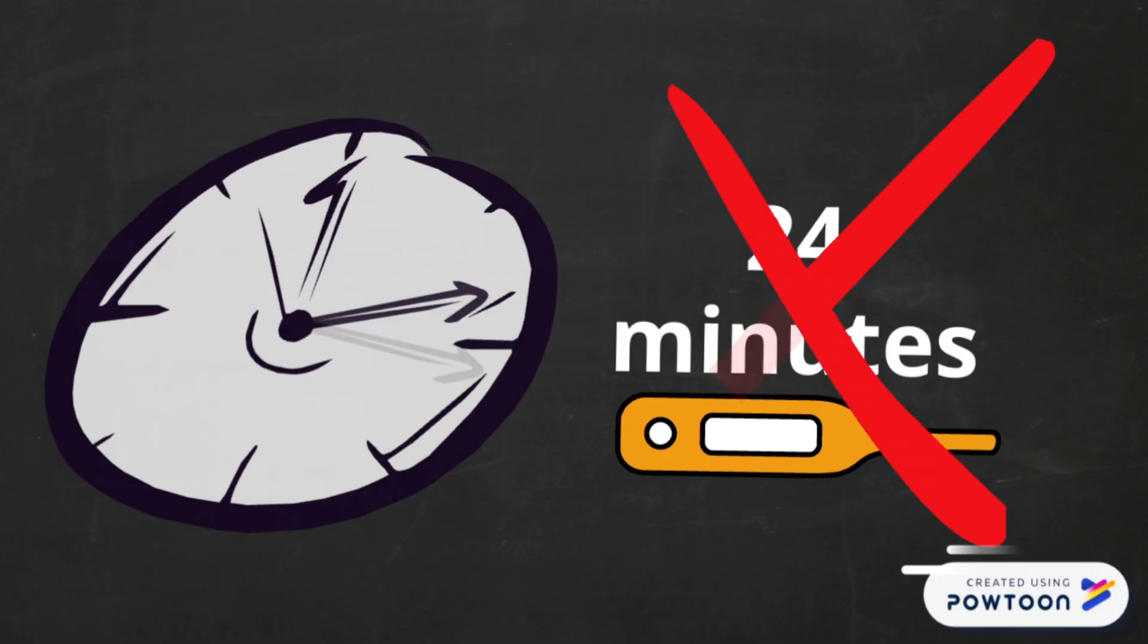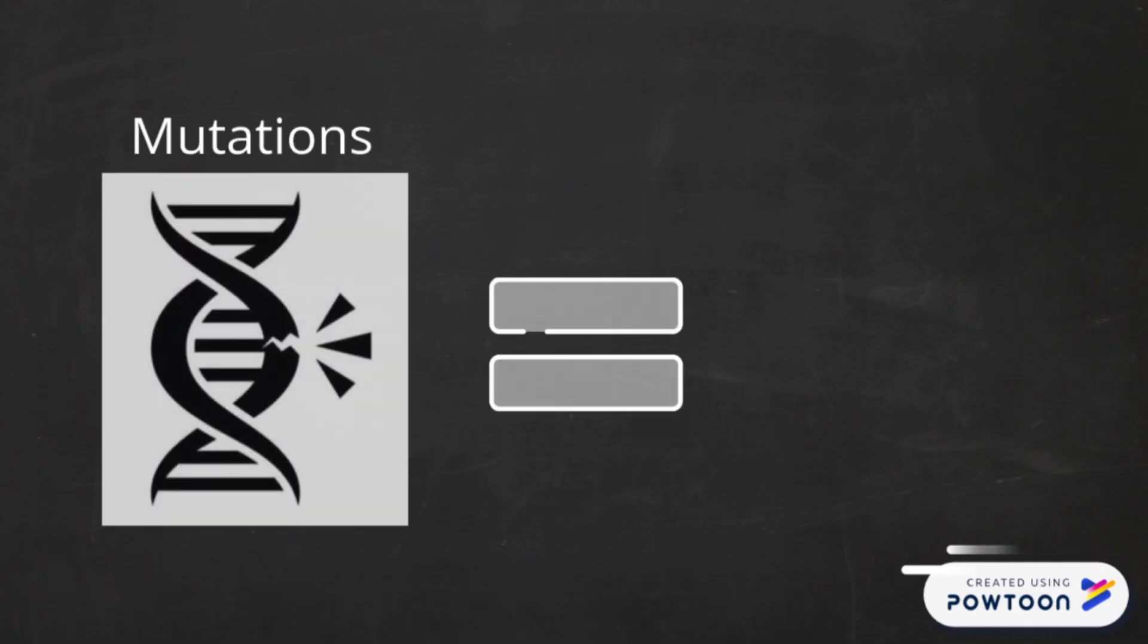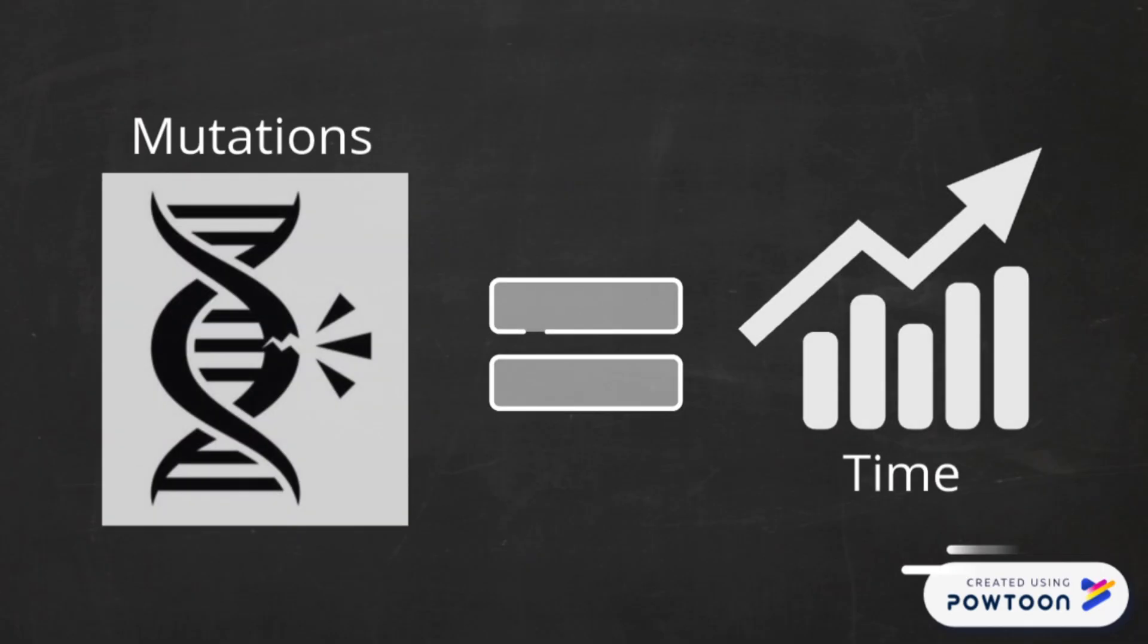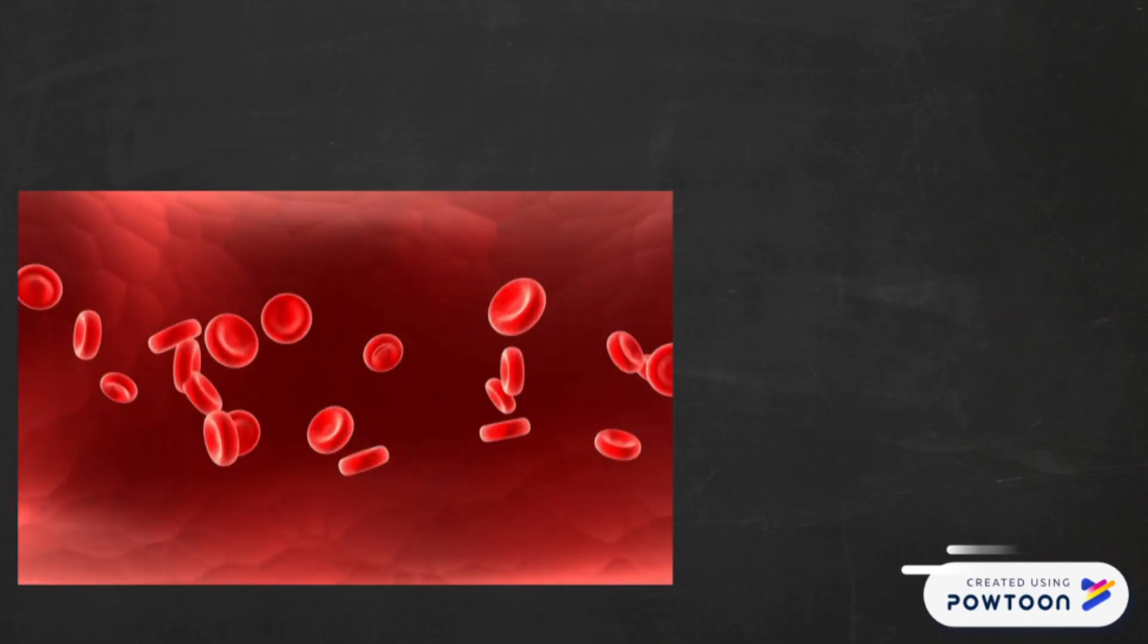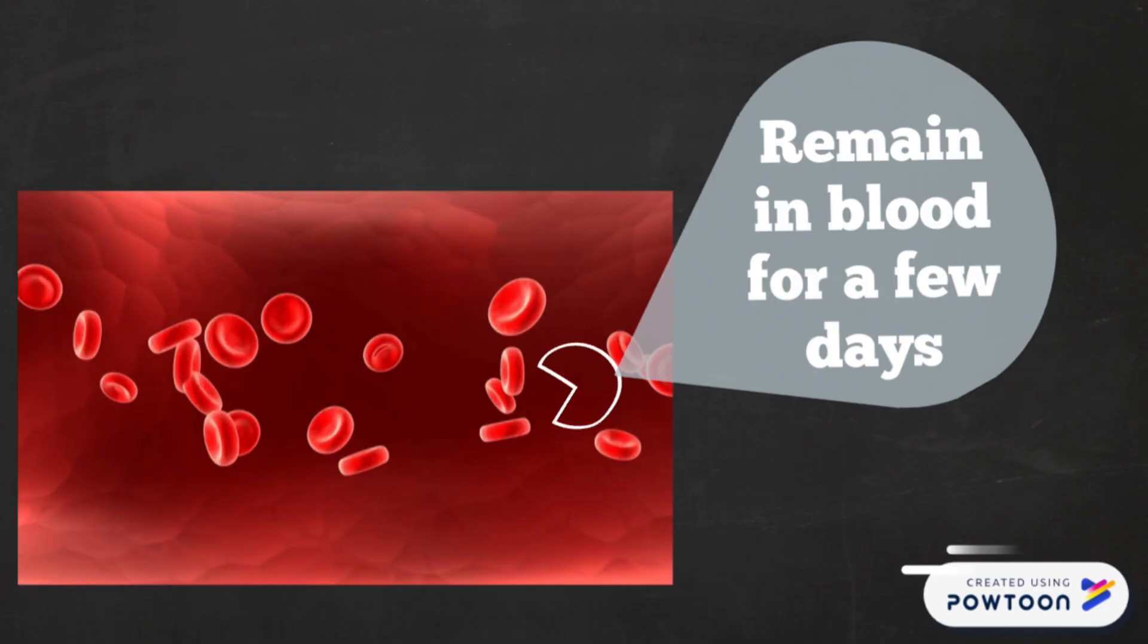However, that is not long enough to treat an overdose or an addiction. Therefore, researchers are trying to add mutations to cocaine esterase to extend the time it can stay functional in the body. The enzyme needs to remain circulating in the bloodstream for a few days, blocking the cocaine high.